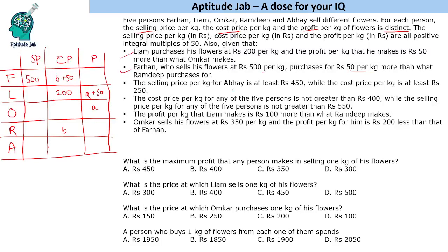The selling price per kg for Abhay is at least ₹450, while his cost price is at least ₹250. The cost price for any of the 5 persons is not greater than ₹400 — maximum value is 400. While the selling price is not greater than ₹550. These are the constraints for cost price and selling price.